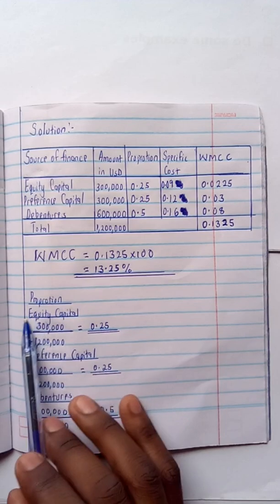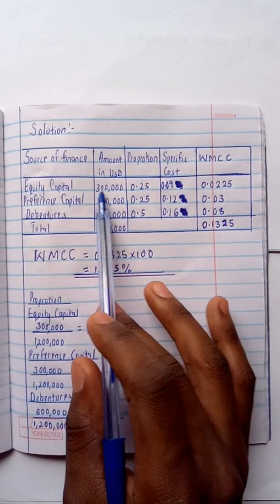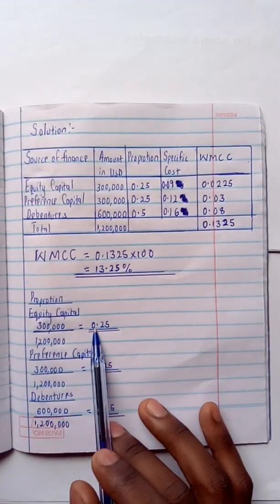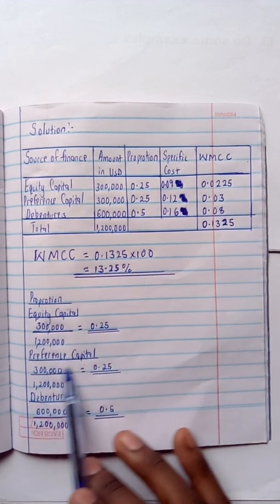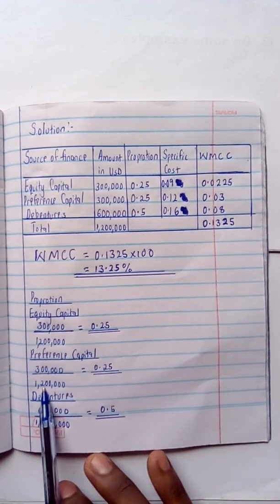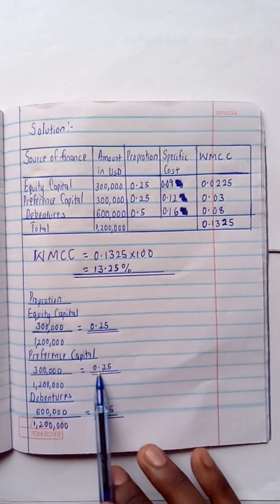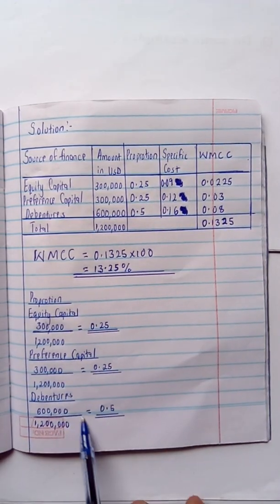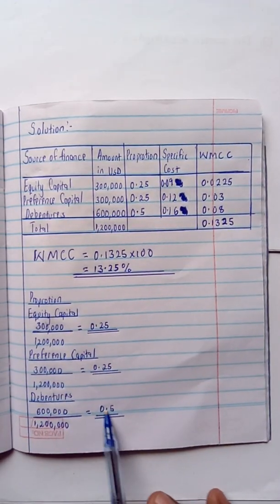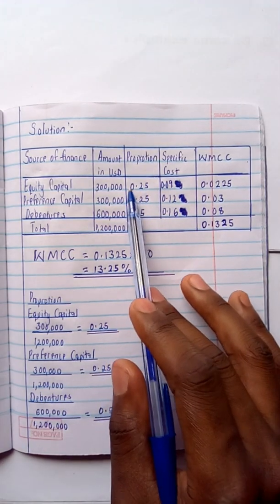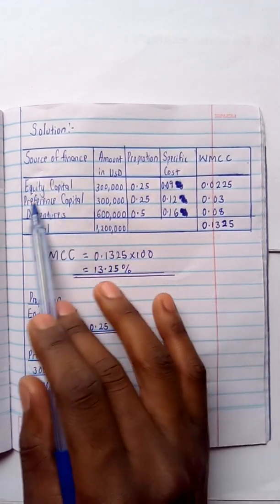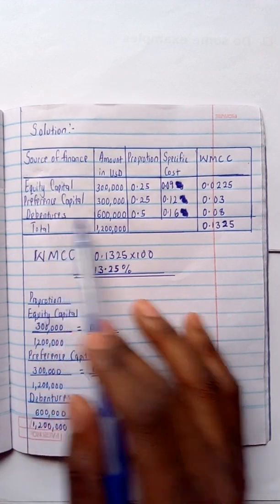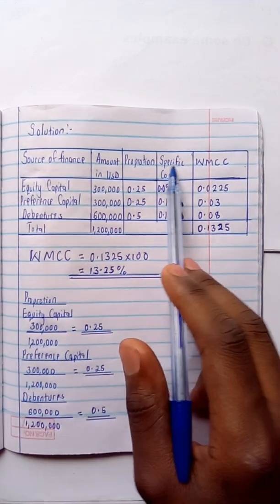For the proportions: equity capital is 300,000 divided by the total, giving 0.25. Preference capital is also 300,000 divided by the total, giving 0.25. Debentures are 600,000 divided by the total, giving 0.5. So the proportions are: equity 0.25, preference capital 0.25, and debentures 0.5.